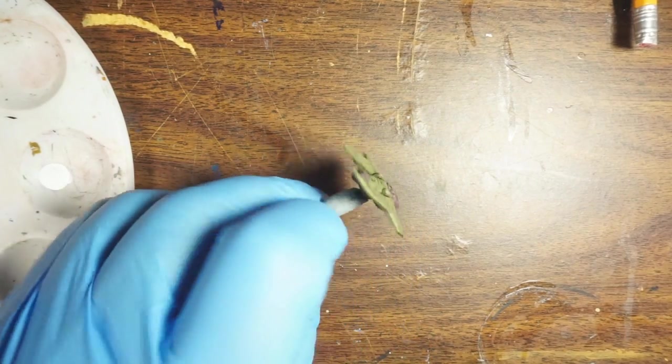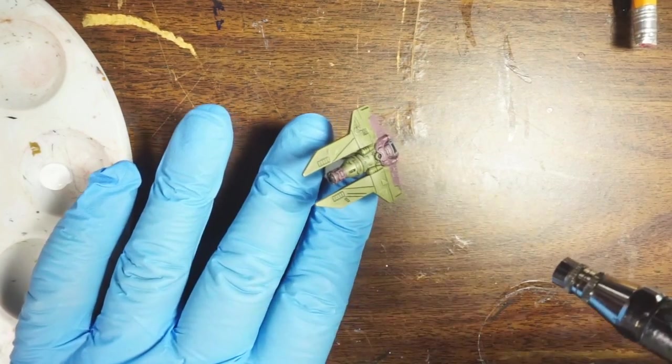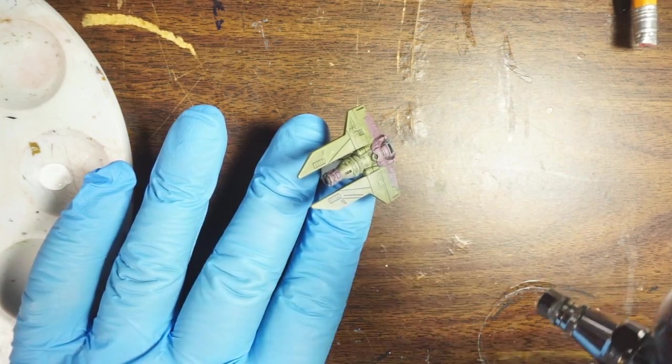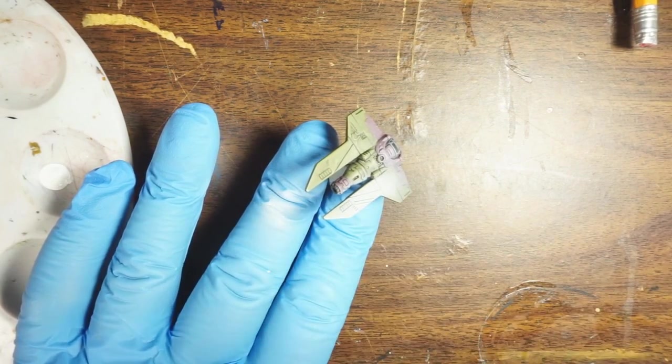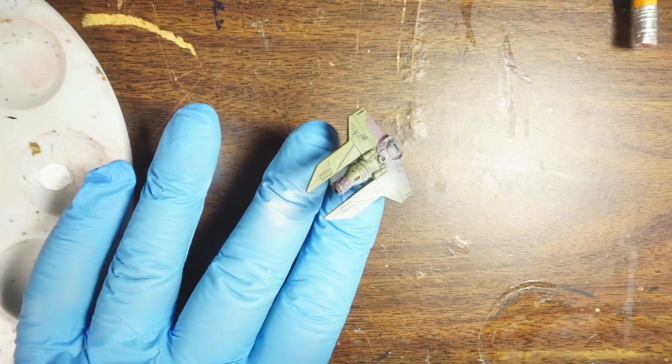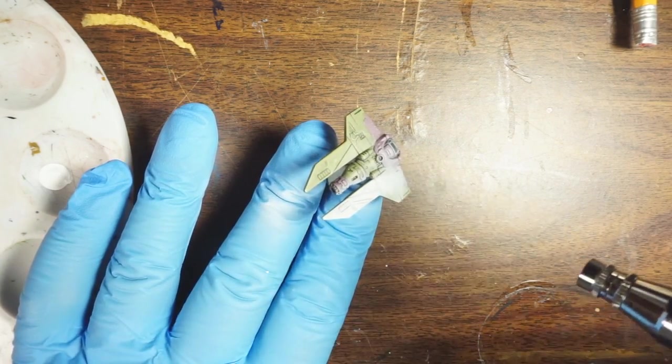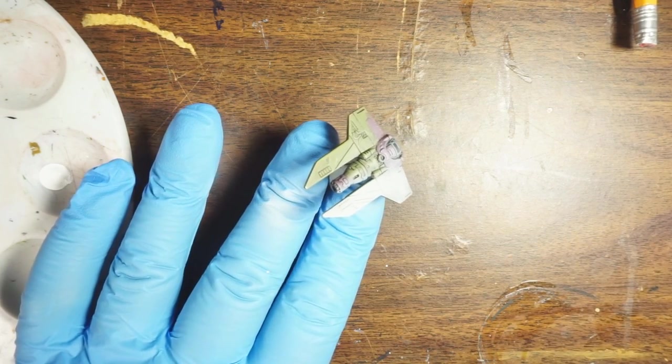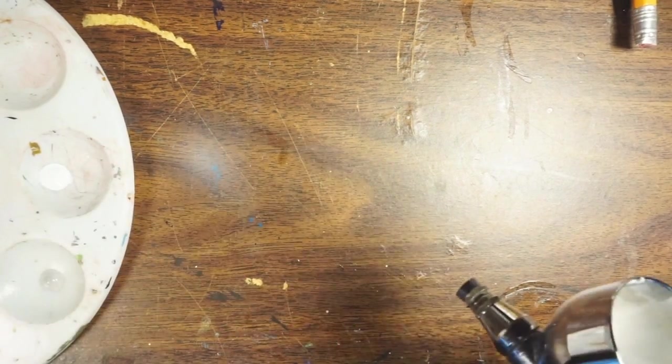I don't usually ever start with white except maybe as a primary. The reason for that is because once you've hit white there's nowhere to go to highlight from there. White is as bright as you can possibly be. So I tend to stay back from white and save white for high highlights.